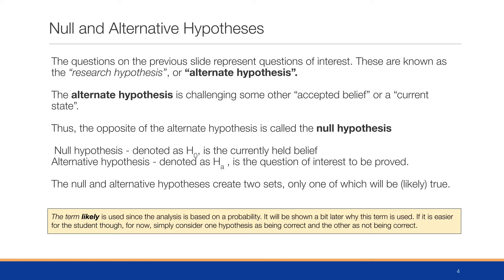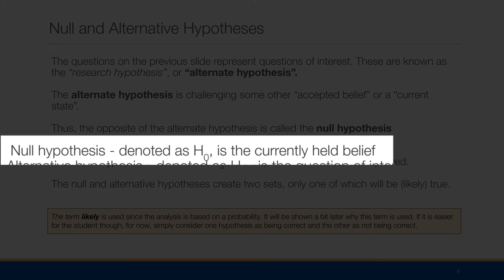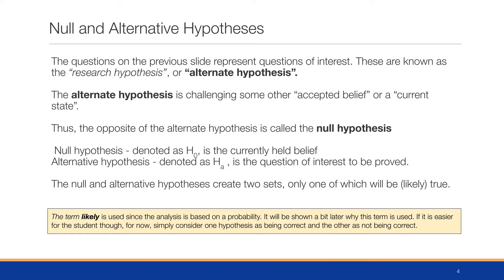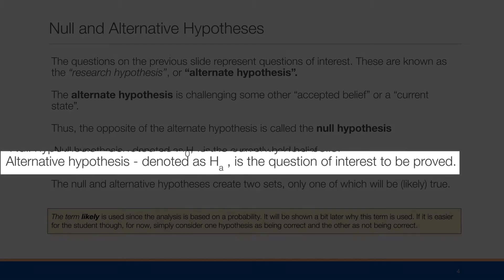The questions from the previous examples represent the question of interest, known as the research hypothesis. We also consider the alternative hypothesis, or alternate hypothesis. This alternative hypothesis is challenging some accepted belief or current state. The opposite of the alternative hypothesis is called the null hypothesis — the current accepted belief. The null hypothesis is denoted as H₀, and the alternative hypothesis is denoted as Hₐ — it is the question of interest to be proved.